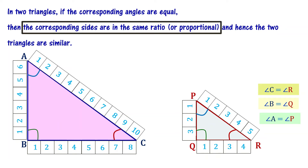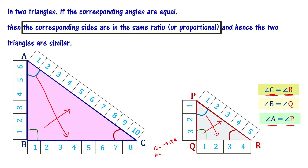Now let's identify the corresponding sides. Since angle C equals angle R and angle A equals angle P, the composite corresponding sides are: BC corresponds to QR, AC corresponds to PR, and AB corresponds to PQ.